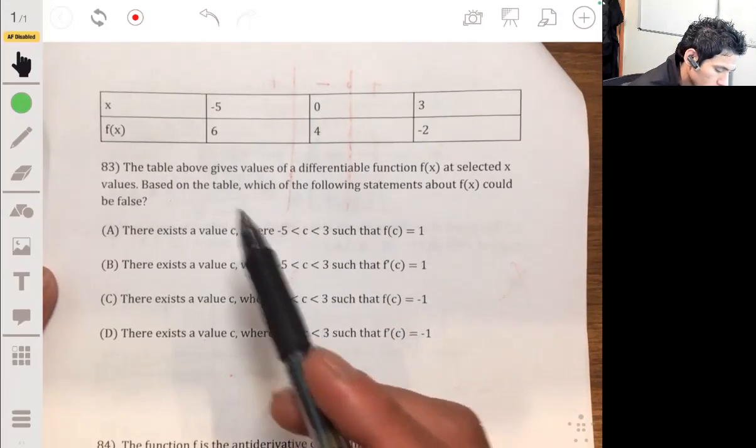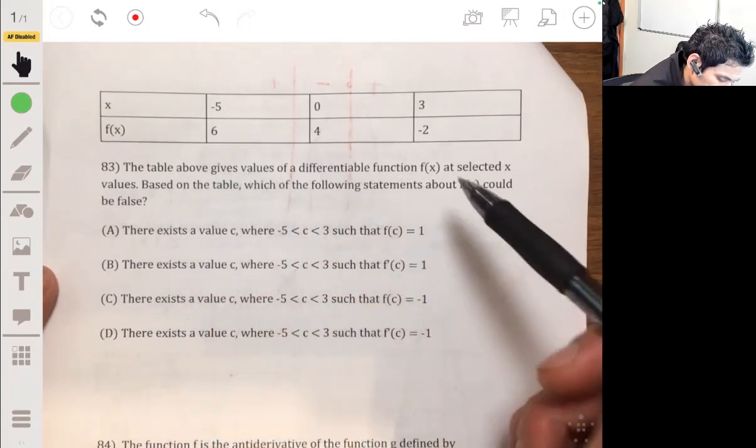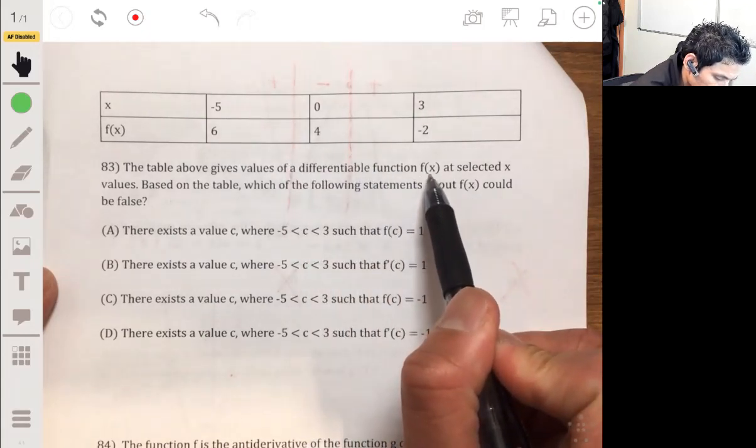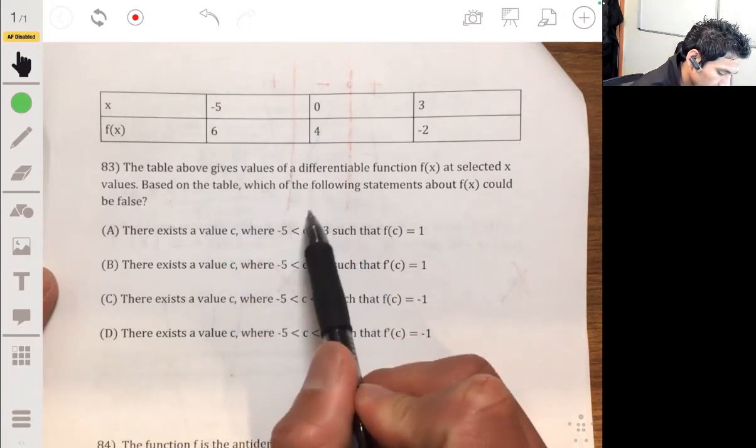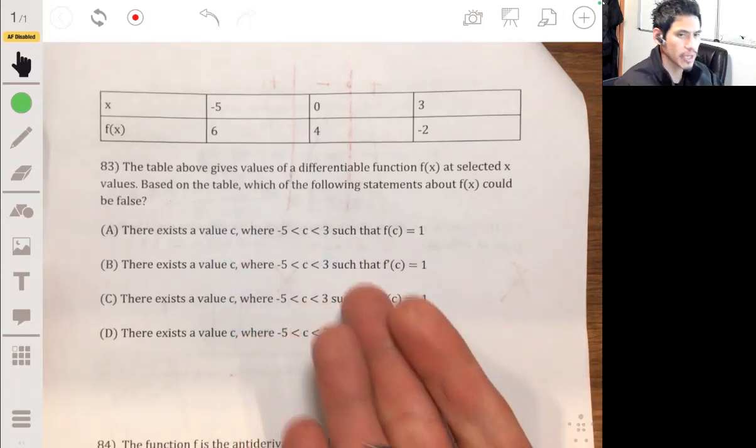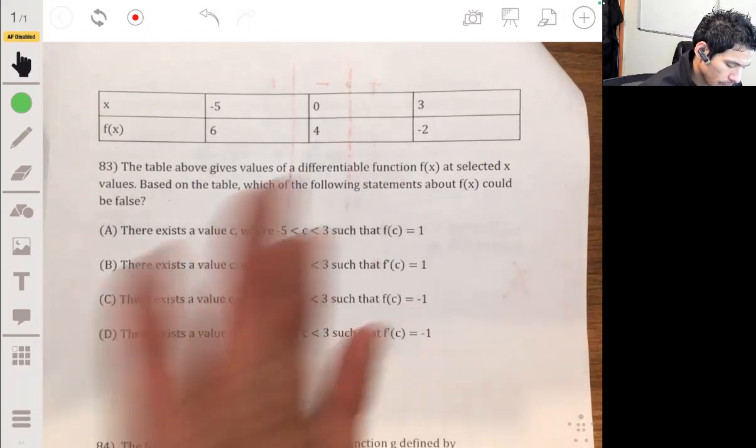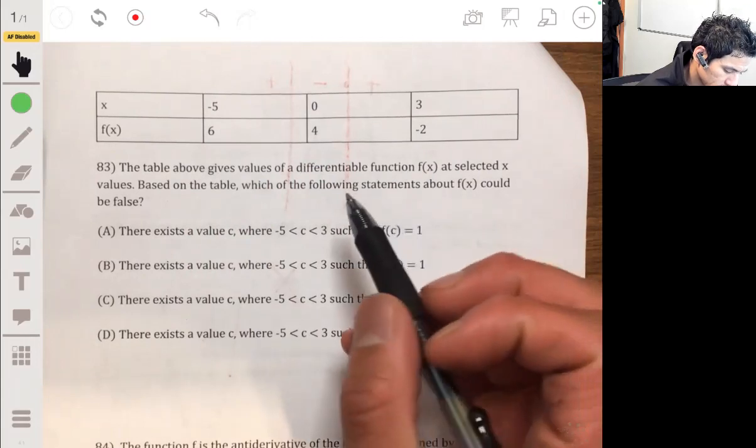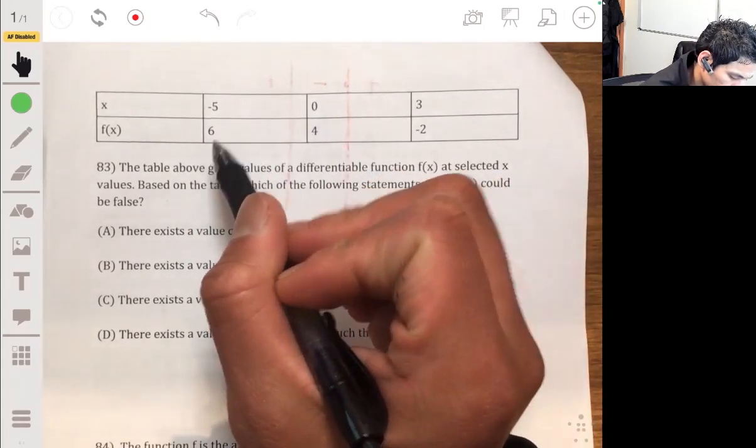Alright, problem 83. We're given this table that's showing the values of this differentiable function f of x, and you've got to figure out which of these could be false. So it's kind of an analytical, logical problem. We really have to think.